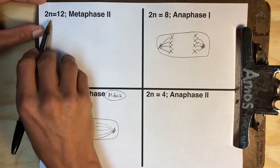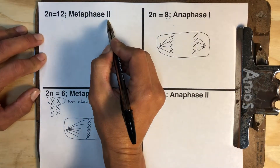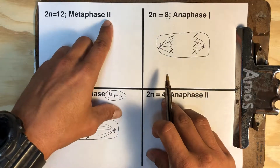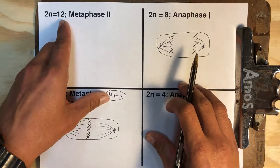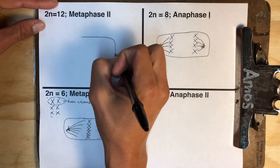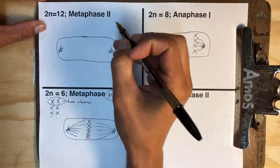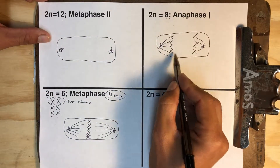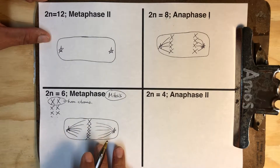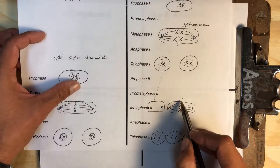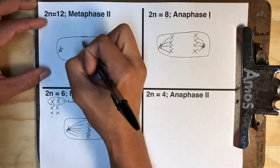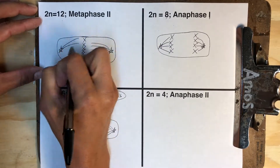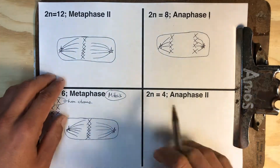Now for metaphase 2, 2n equals 12 means we started out with 12 chromosomes, but we're in the second phase of meiosis. If we're in meiosis 2 at all, that means we've already reduced chromosome number by half, so we don't start with 12 chromosomes — we start with 6. At metaphase, all those chromosomes are lined up, so I've got my centrioles at either side and six chromosomes in the middle. During the second phase of meiosis, all we want to do is split up sister chromatids, so those chromosomes should be lined up vertically. I'll draw 6 chromosomes with the spindle on either end, about to pull them apart.